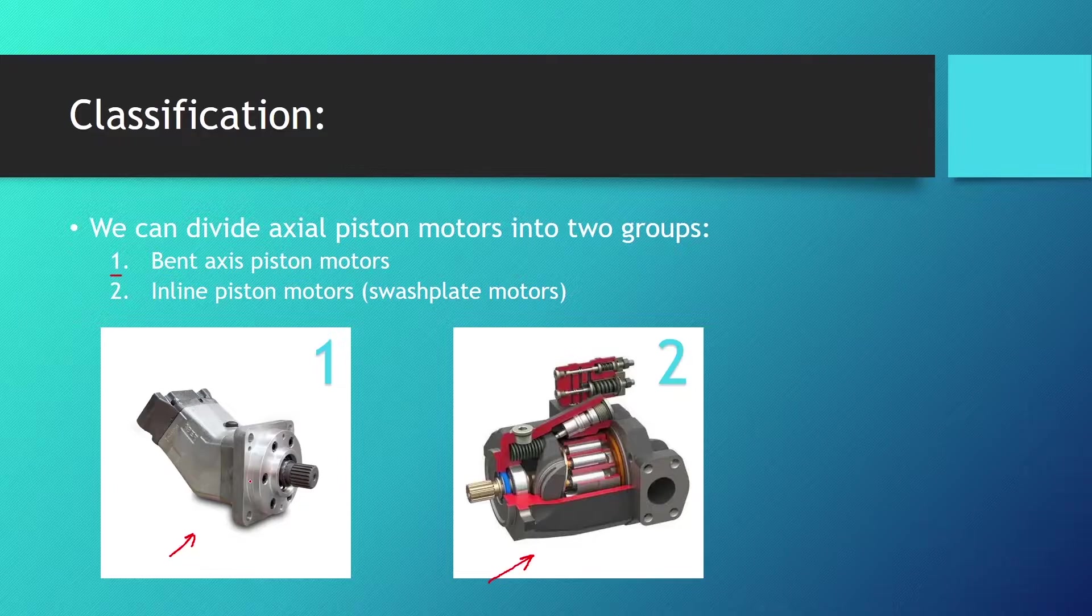This right here is with the fixed angle. You can see the casing of the motor is fixed, so this is not an adjustable piston motor. The displacement of the inline piston motors depends on the swash plate's angle. We can see the swash plate right here. Those swash plates can also be fixed or variable. If they're variable we have an adjustable piston motor, and if they're fixed we can't adjust the displacement of the motor.